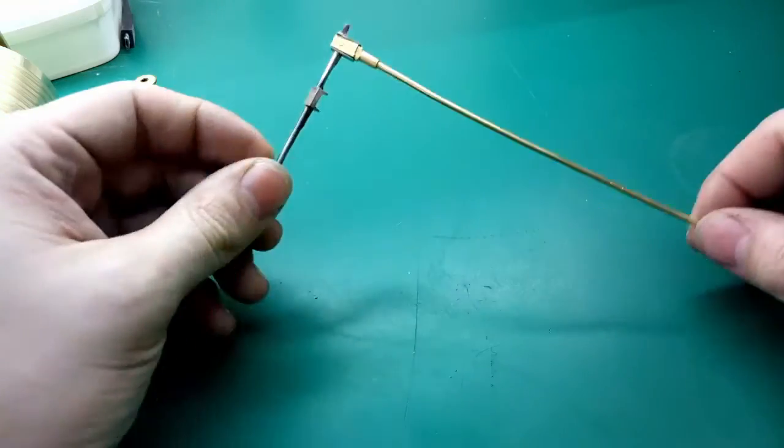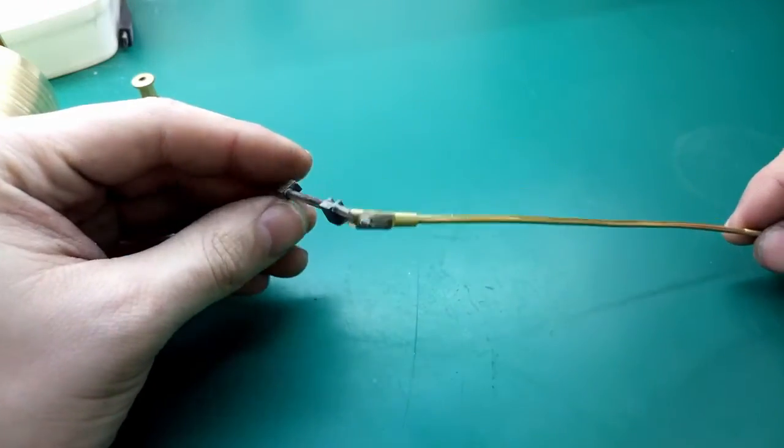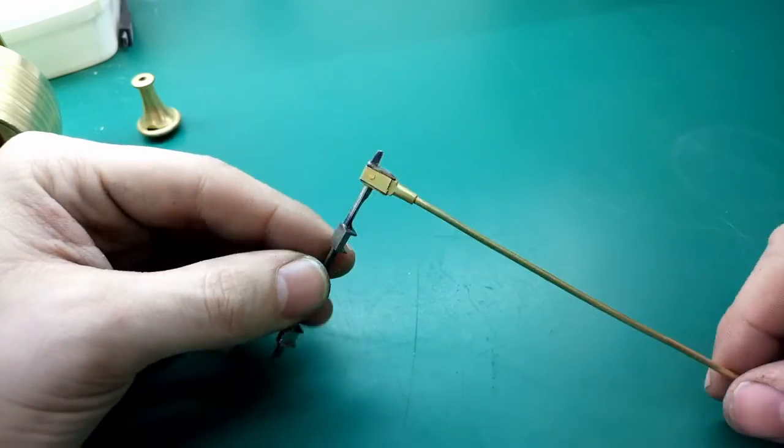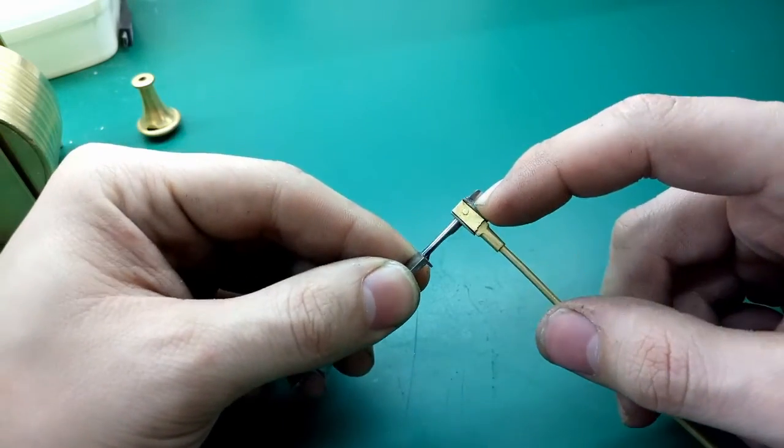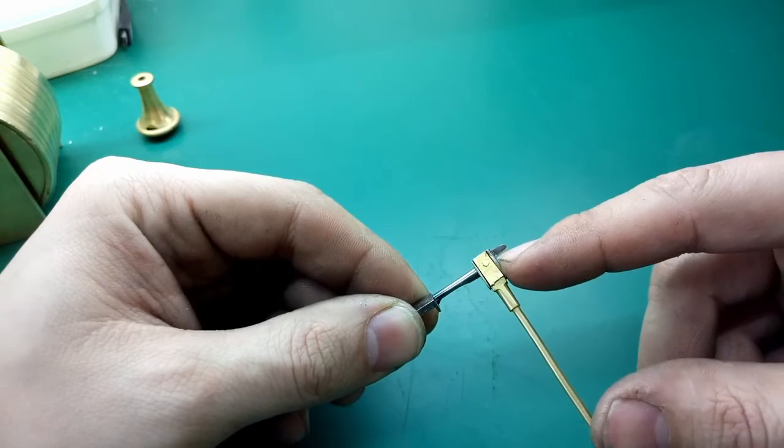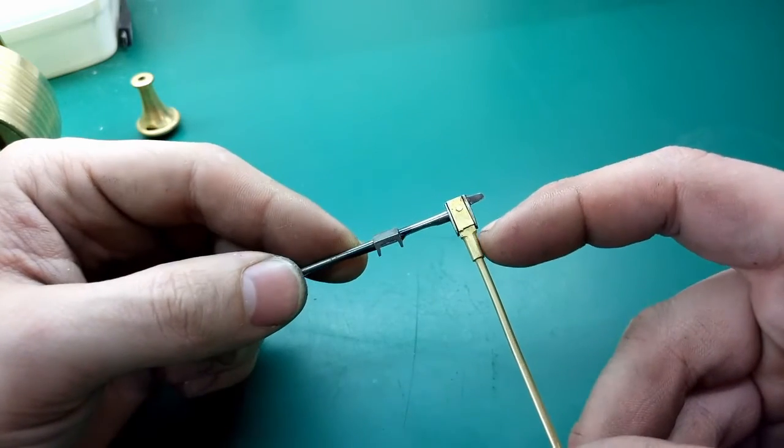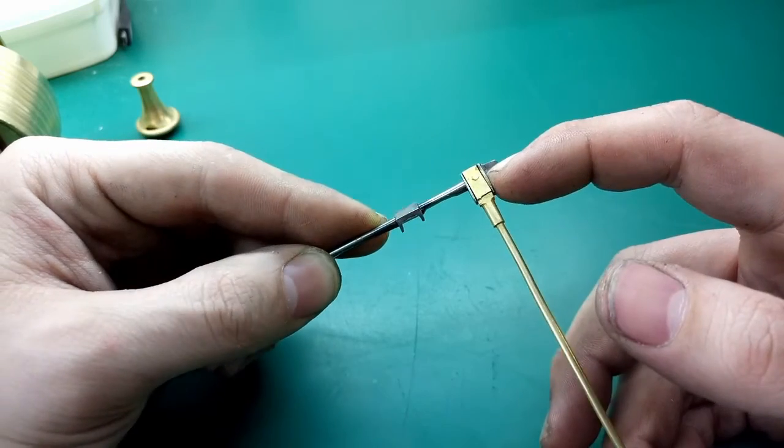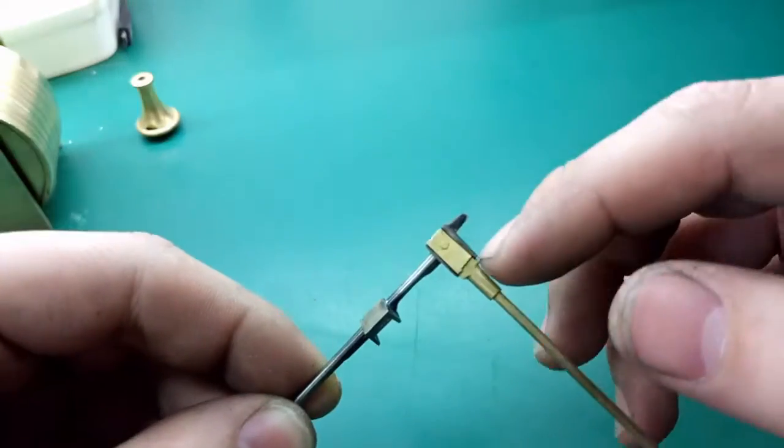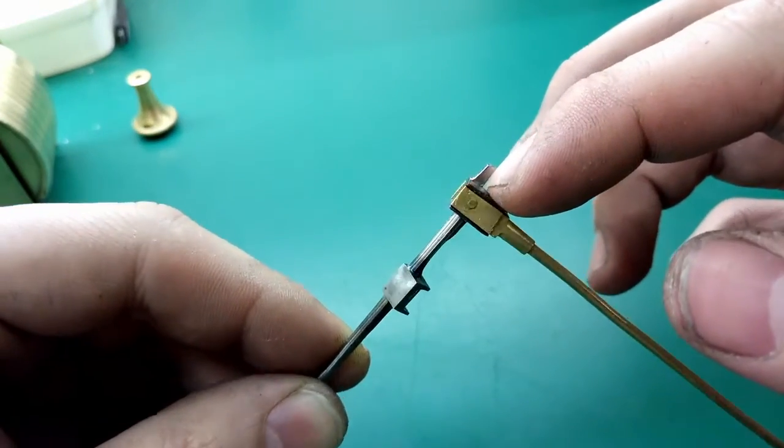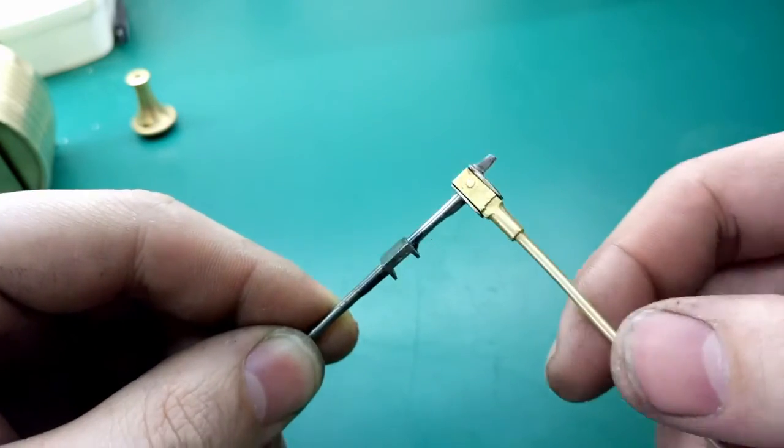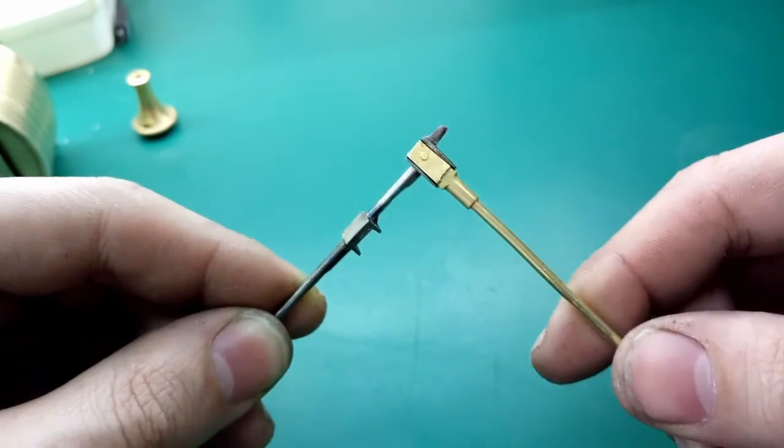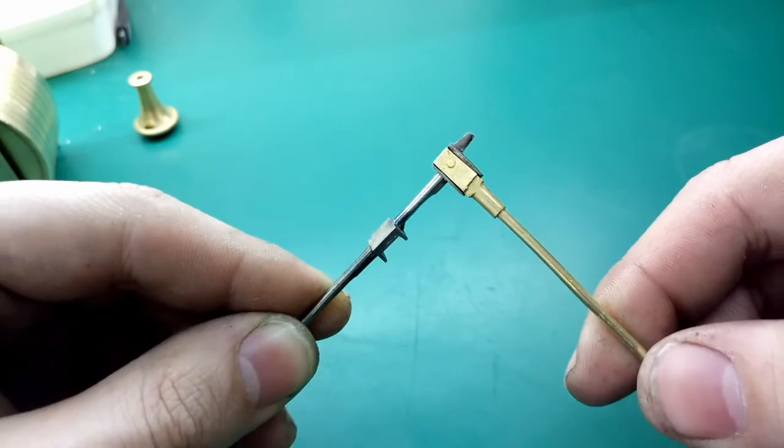Okay, so on my workbench today is a verge bracket clock. The problem I'm having at the moment with the arbor is that the knife edge has been filed so many times. I'm sure you can see the bottom of the knife edge here where the pendulum actually rocks is now so far above center that as the pendulum swings side to side, the arbor itself lifts.